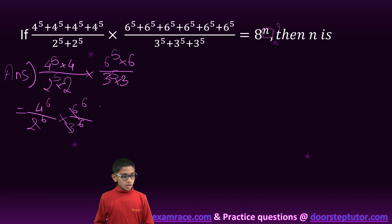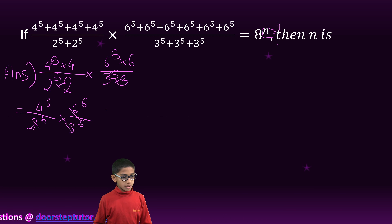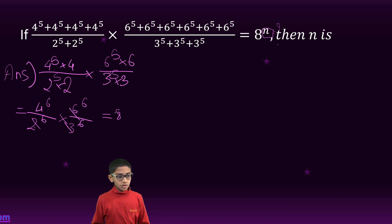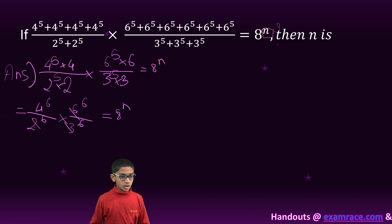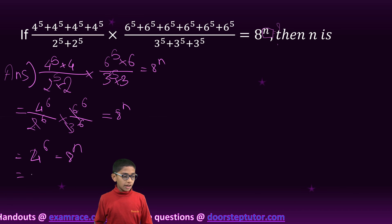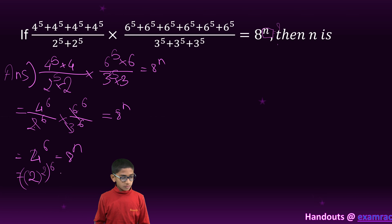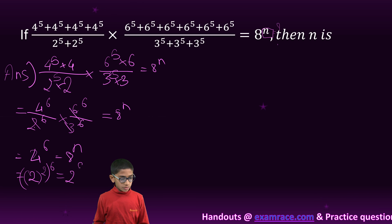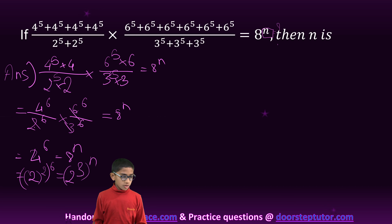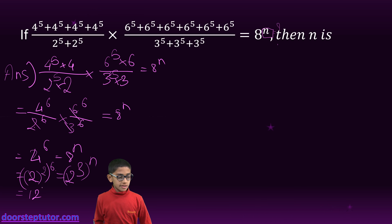So now we can cancel these to get 4 raised to 6. This is 2 raised to 6 and this is 1 upon 2 raised to 6, so we can cancel these and get 4 raised to 6. So 4 raised to 6 is equal to 8 raised to n. We can write 12 as 2 into 6, which equals 12. So 12 is equal to 3n.